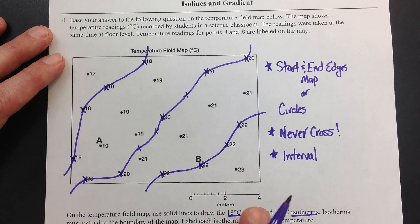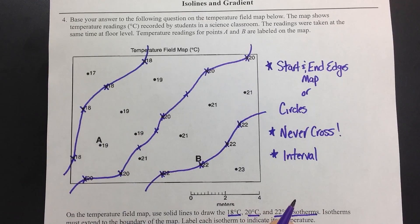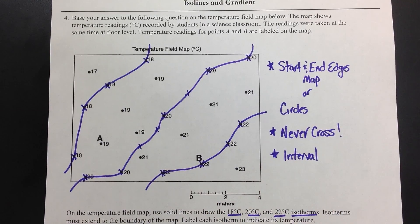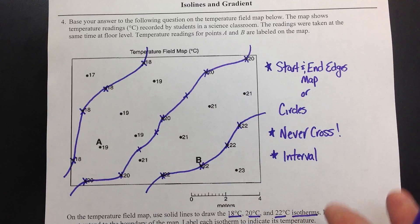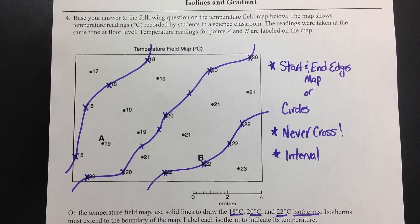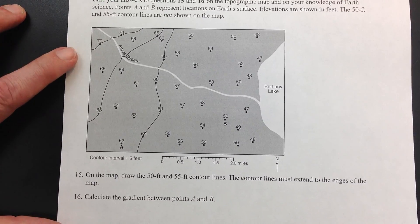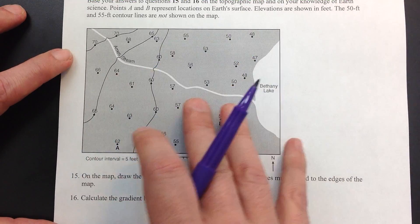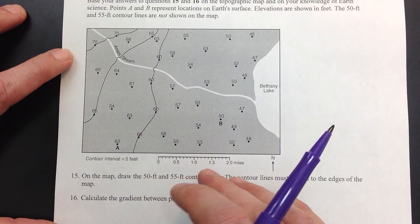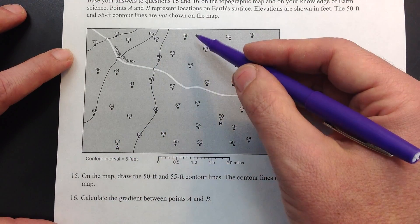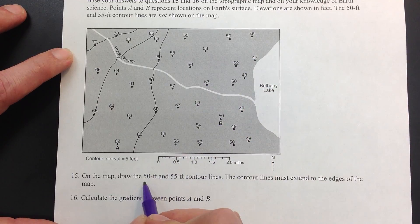That's a real basic field map that shows up very often on a practice exam, a Regents exam, or your chapter test. The next one I want to do is an actual contour line map — very simplistic. We're going to draw the 50 and the 55.